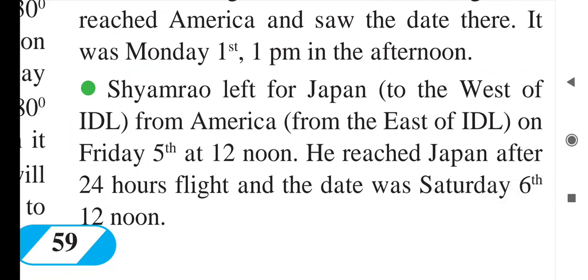Eastern time is ahead, so Shambrao left for Japan — which lies to the west of the International Date Line but east of the prime meridian — on Friday at 12 noon. He reached Japan after a 24-hour flight, and the date was Saturday the 6th at 12 noon. He started on Friday the 5th and arrived on Saturday the 6th — same time of 12 noon, but a new day and new date because he traveled west to east.